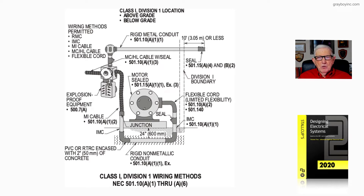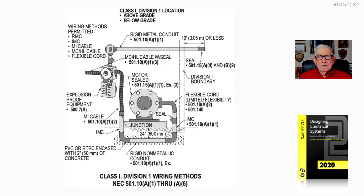This is in accordance with 501.15 in the NEC. If you're 2 inches or greater, you're going to have to use a seal. Explosion-proof motors need a seal in accordance with 501.10A2.